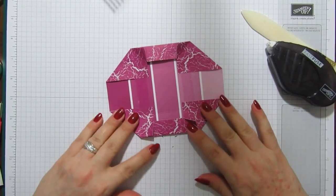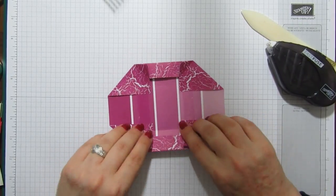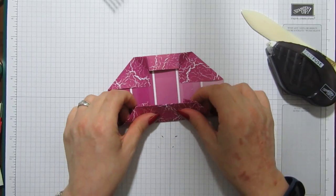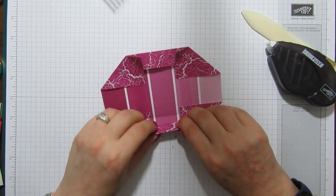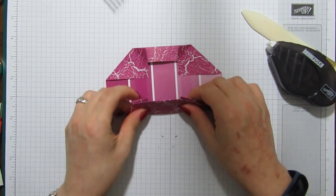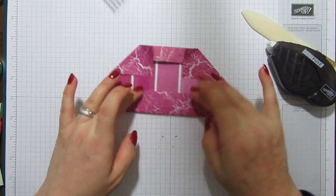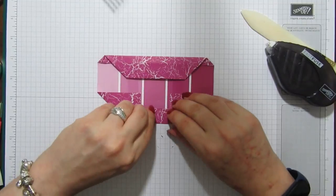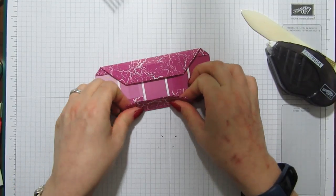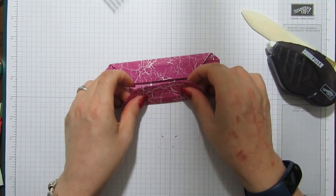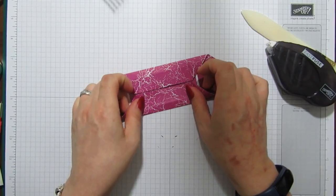So just have those flat like that. And then you've got your score line here and then you're just going to fold it like that, and then fold it so it will actually stick to the tape that you have there.